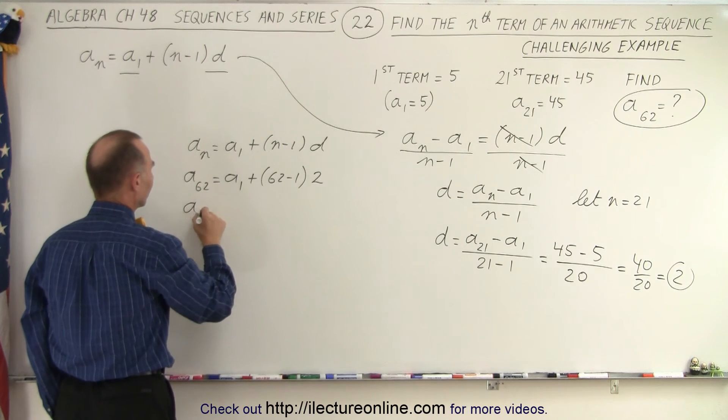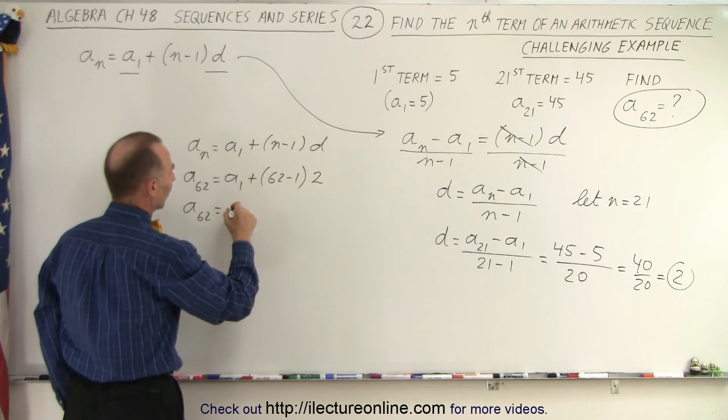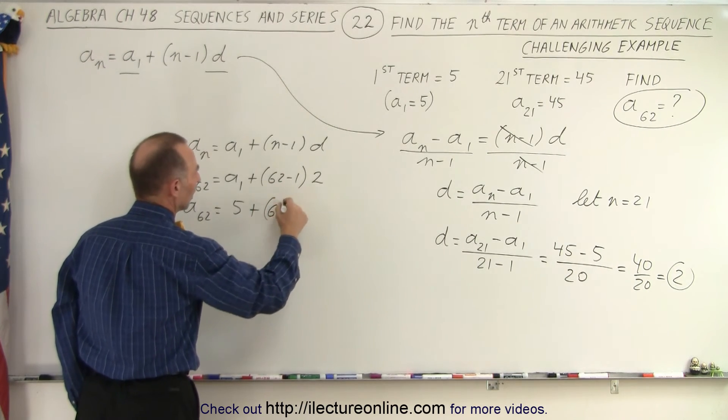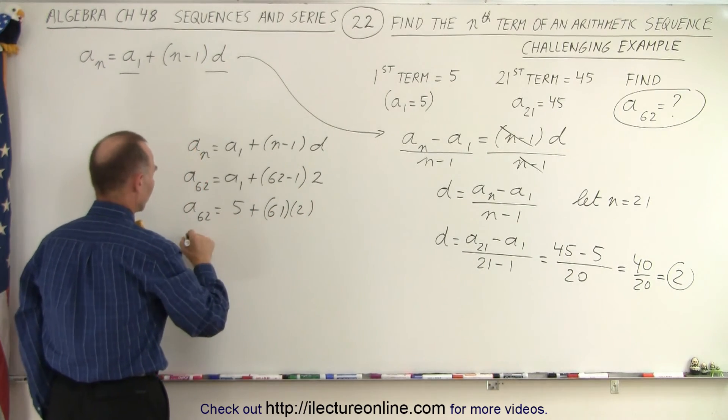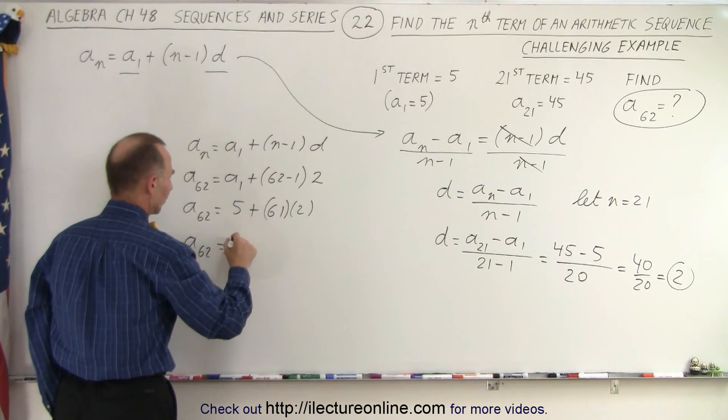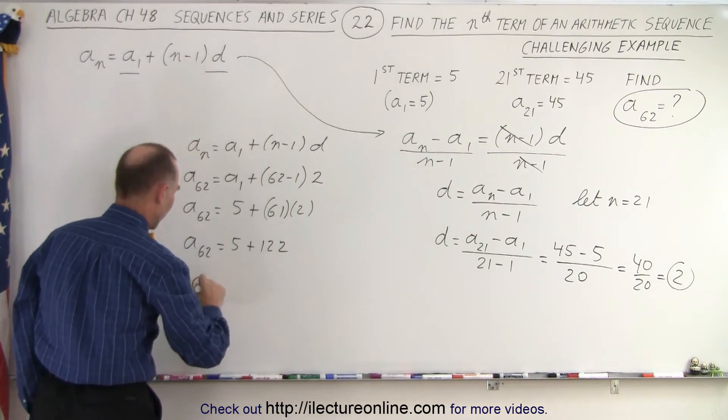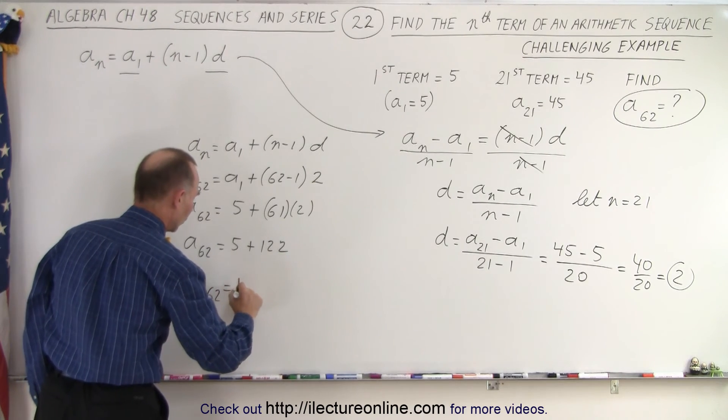A sub 1, of course, that's A62, is equal to A sub 1, which is 5, plus 62 minus 1, which is 61, times 2. So A62 is equal to 5 plus 122. And so A62 is equal to 127.